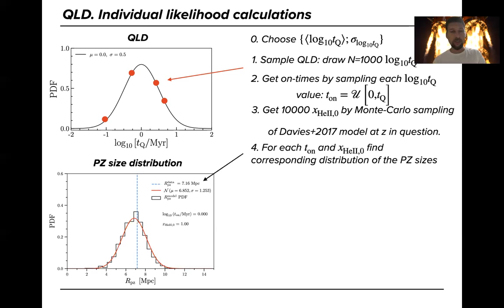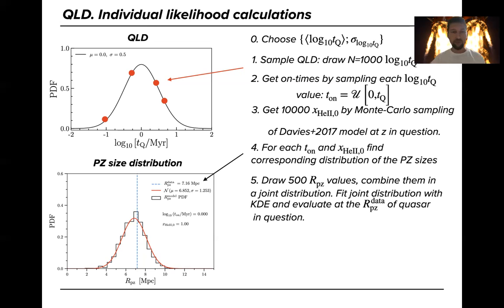For each of this combination in our simulations we find the corresponding distribution of the proximity zone sizes and we draw 500 values of the proximity zone sizes from each of these distributions. We join them in one combined distribution of the proximity zone sizes that correspond to the realization of the quasar lifetime distribution.